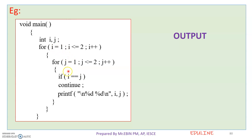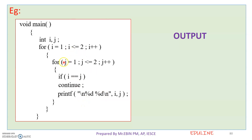Now we want to take a look at the main function. We take a variable declaration, then I will start the session with a for loop: for i equal to 1, i less than or equal to 2, i plus plus. The body portion has another for loop. Inside, if i is equal to j, we will have a printf statement. Here is the program, let's start working.